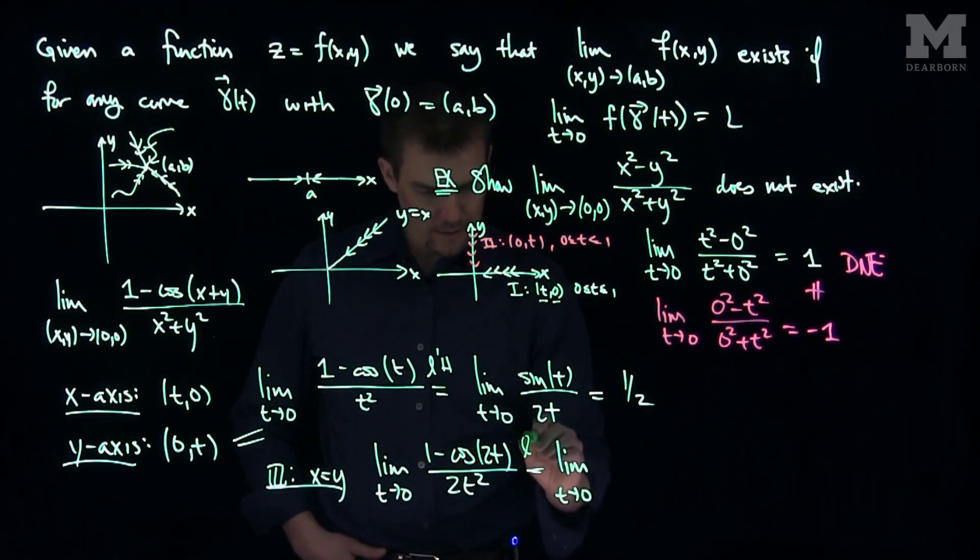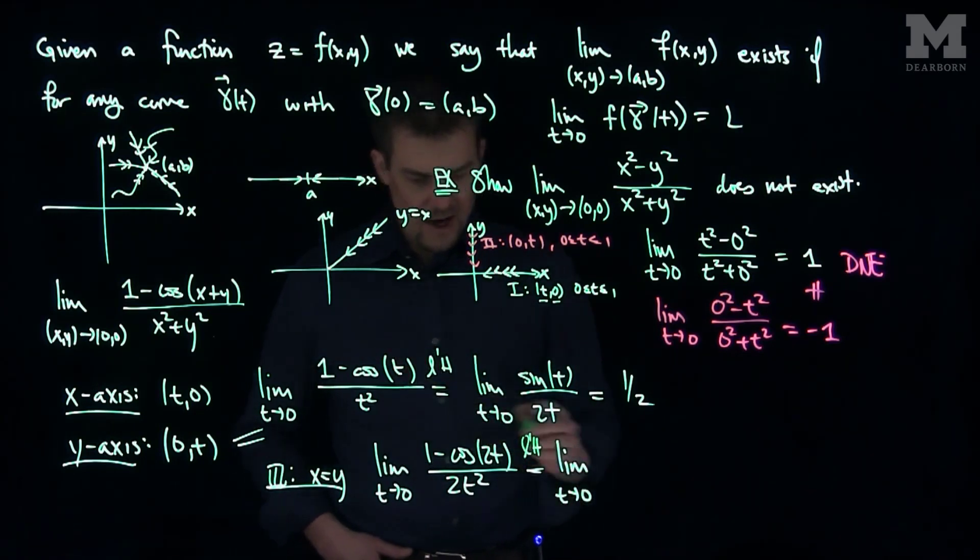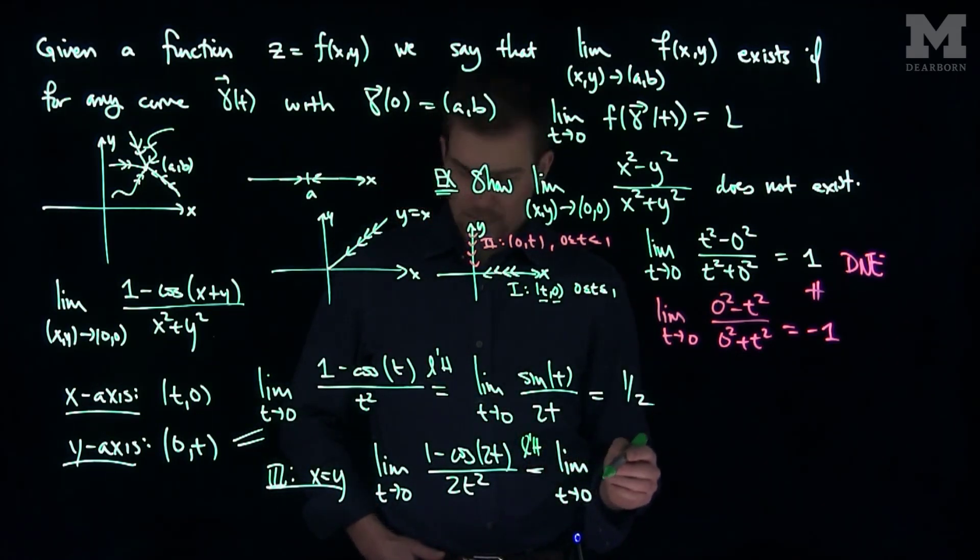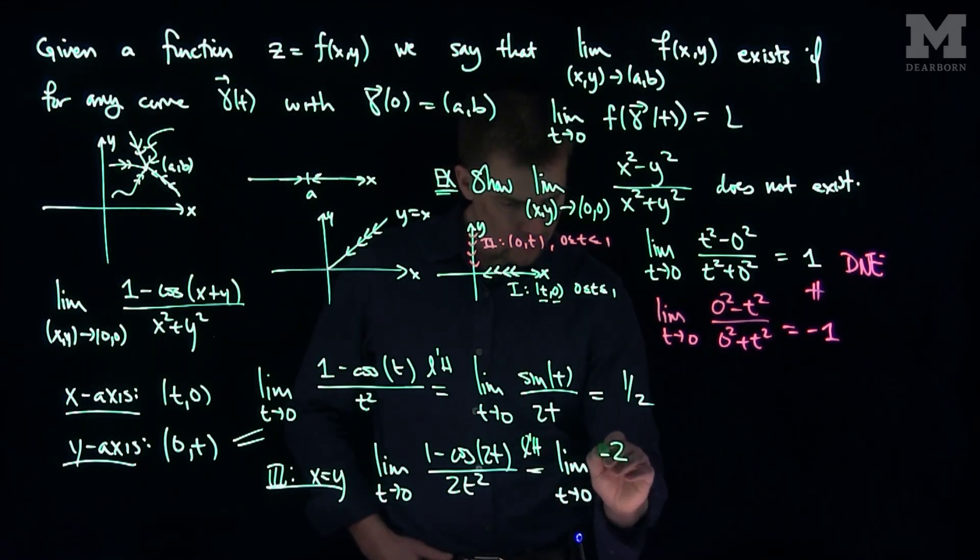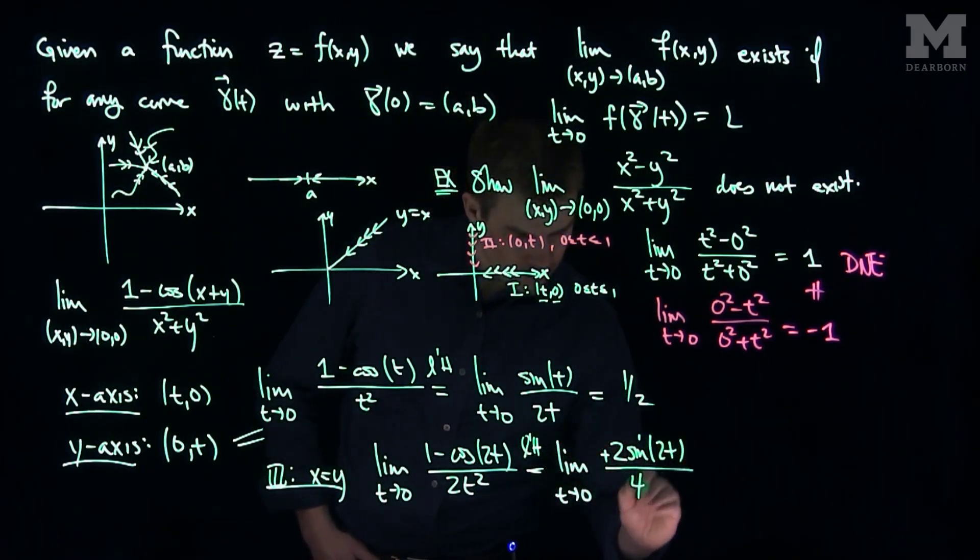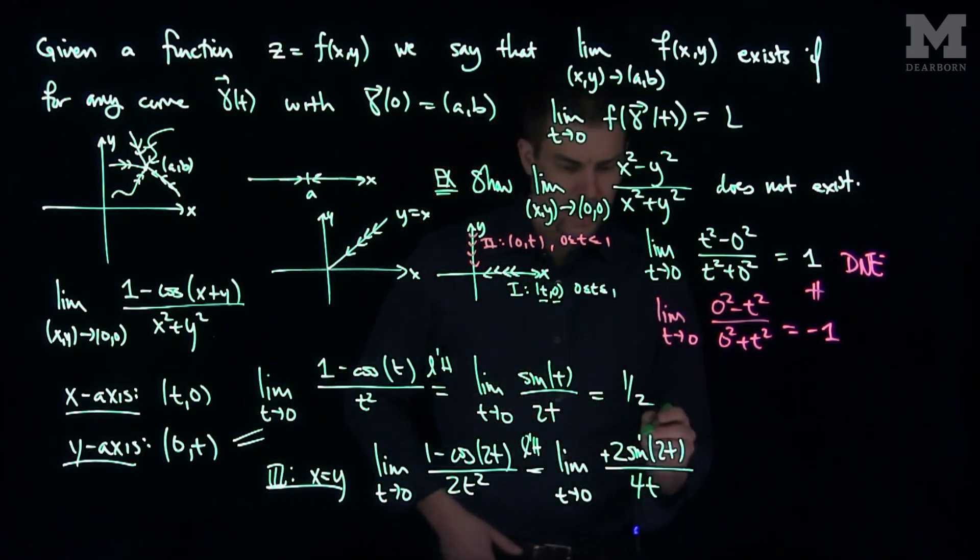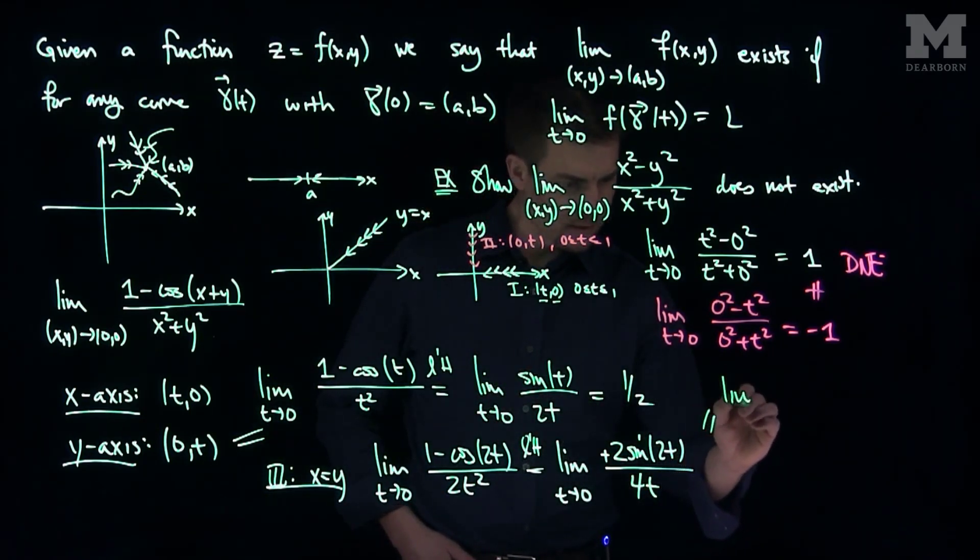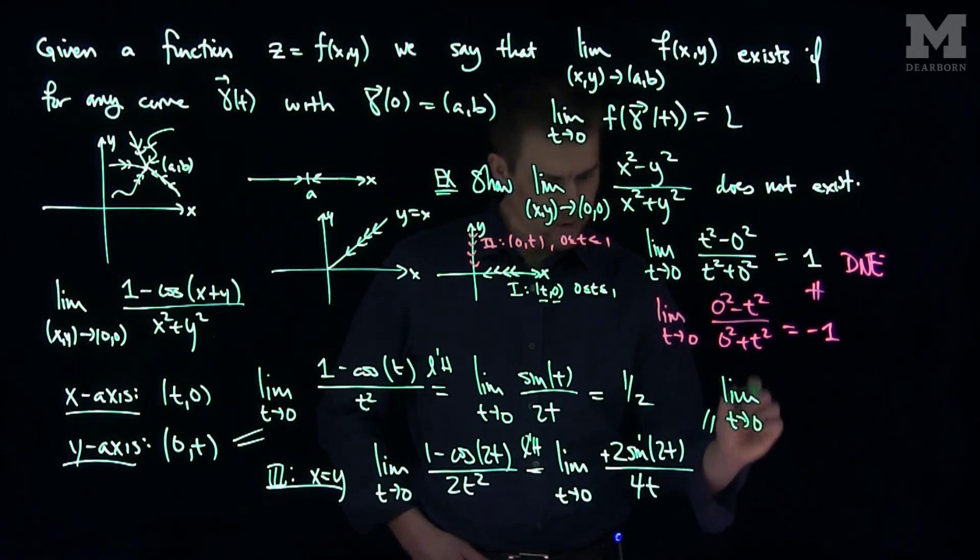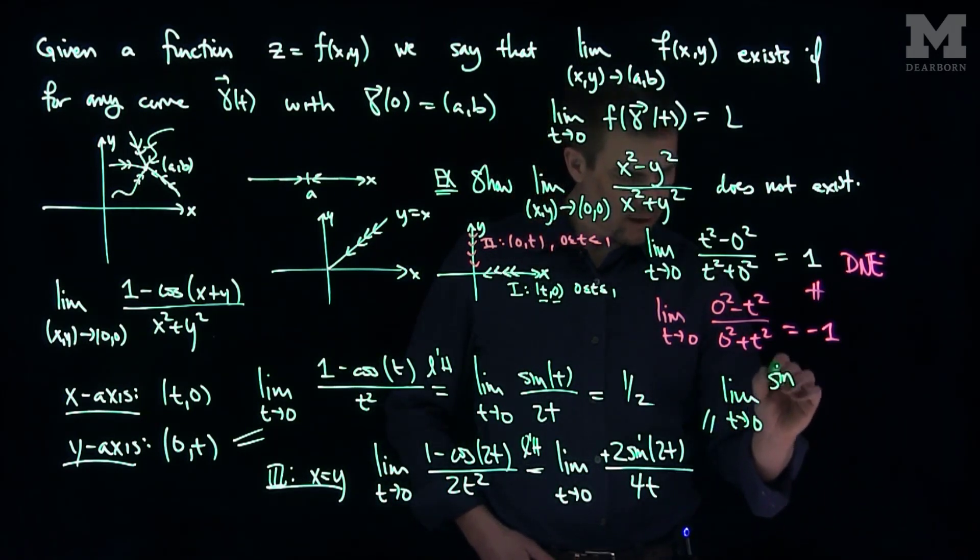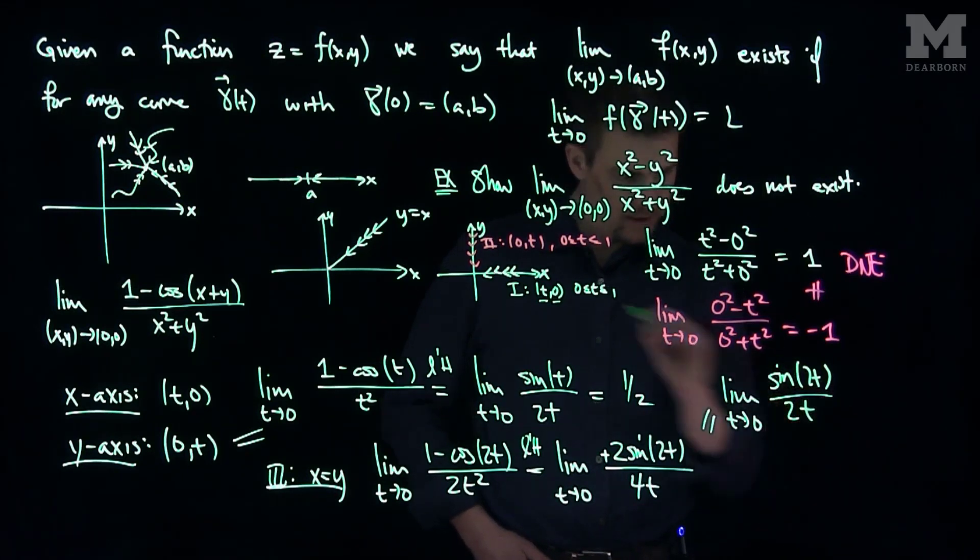And so what this will be is this is going to be the limit as t goes to 0. We can use L'Hopital's rule again, and we'll get that we will have a positive 2 sine 2t over a 4t. And so this will be the limit,